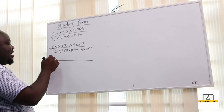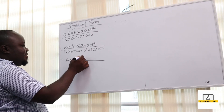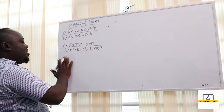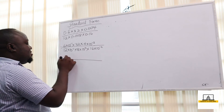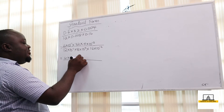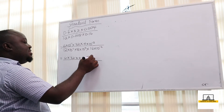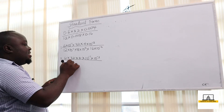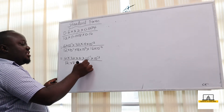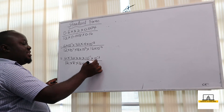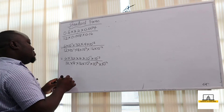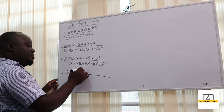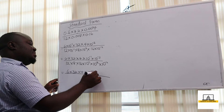In our next step we are going to group like terms. For the numerator we shall have 6 times 32 times 4 times 10 raised to the power negative 1 times 10 raised to the power negative 3. For the denominator we shall have 12 times 8 times 16 times 10 raised to the power negative 1 times 10 raised to the power negative 3 times 10 raised to the power negative 2.